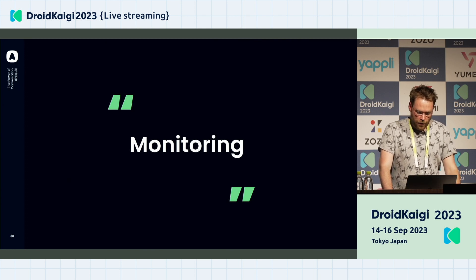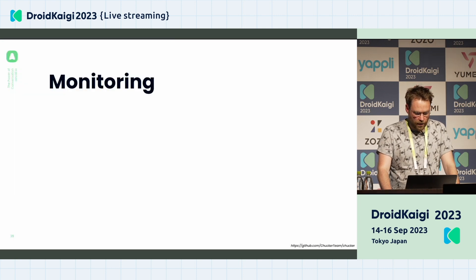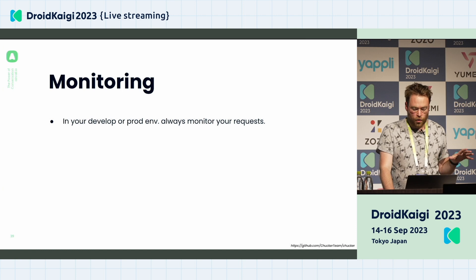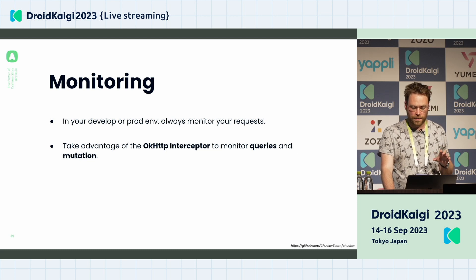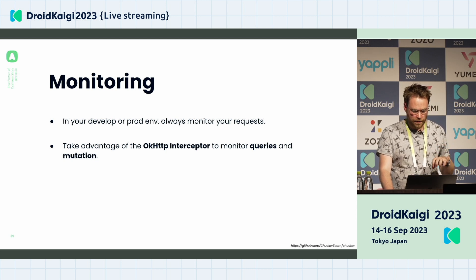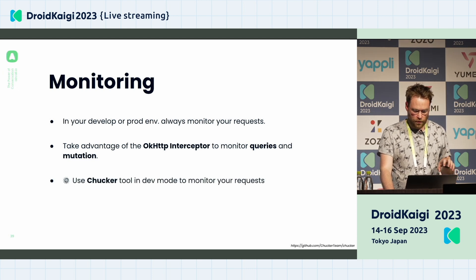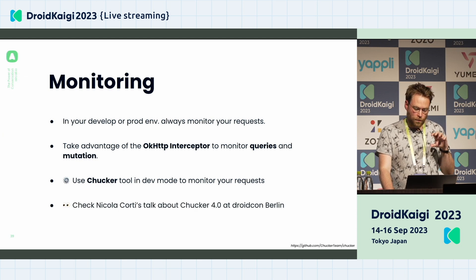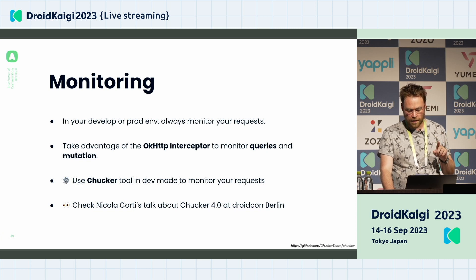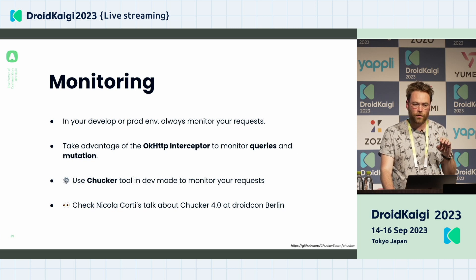Another very important thing is the monitoring part. In your development or production environment, always monitor your requests. Take advantage of OKHttp interceptors to monitor your queries and mutations regarding the time and resources used on your device. You can also use Chucker, a library to monitor HTTP and GraphQL requests. Check out the talk by Nicola Coretti at the last Droidcon Berlin conference — they released version 4.0 very recently with lots of improvements for monitoring GraphQL queries and mutations.